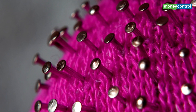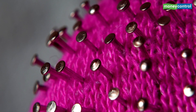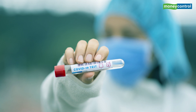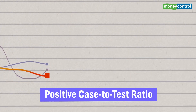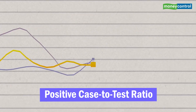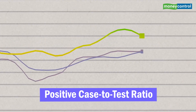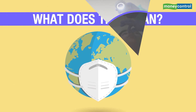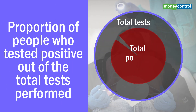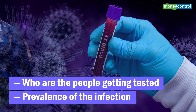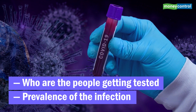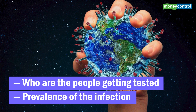The spread and severity of the coronavirus pandemic has necessitated a sharp increase of testing globally. An oft-used and important statistic associated with testing is positive case-to-test ratio. What does this mean? It simply refers to the proportion of people who have tested positive out of the total tests performed. The positive case-to-test ratio offers crucial information about who are the people getting tested and prevalence of the infection.